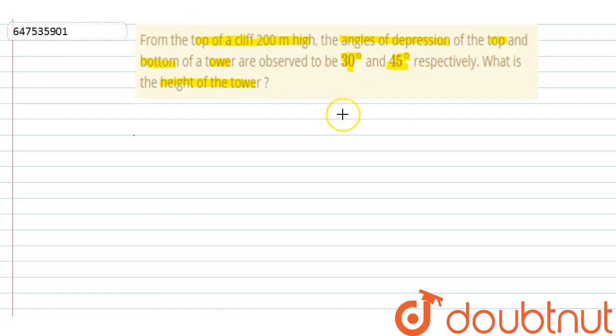Let's make a diagram. This is cliff and this is tower.